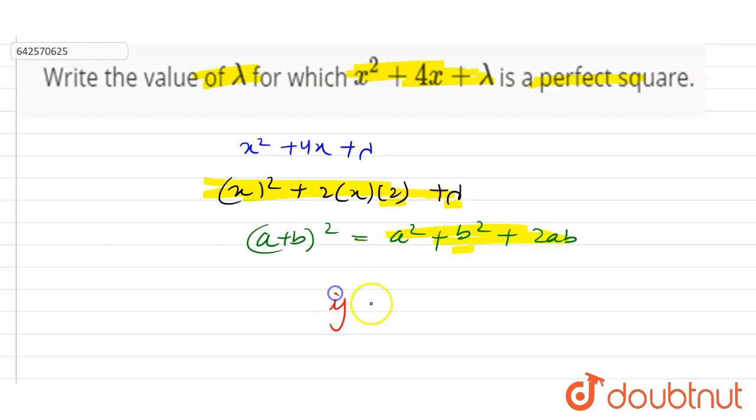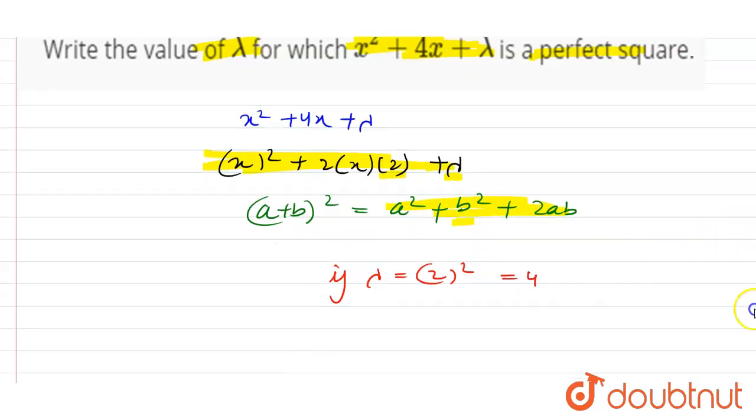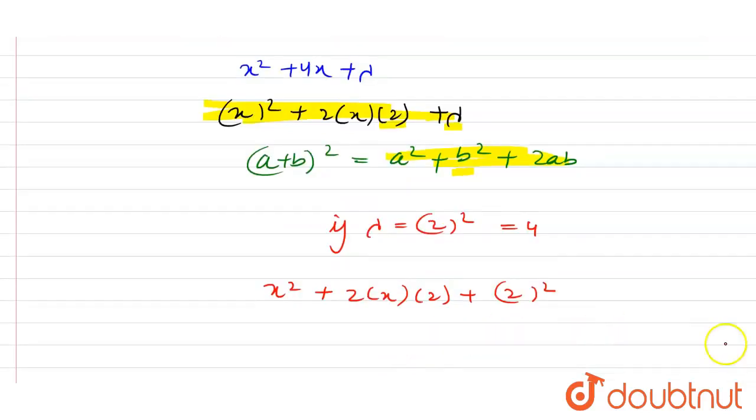So if λ equals 2², which equals 4, our equation can be written as x² + 2(x)(2) + 2². This can be written as (x + 2)².